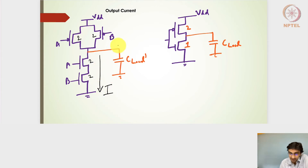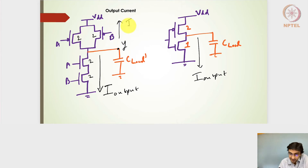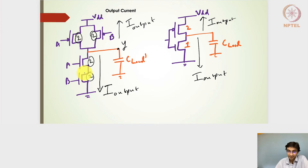The way we size these transistors is: if it is 2-to-1, we want the sizes to be 2 and 2 on both sides, so that while the output is falling down, the falling resistance equals that of the 2-to-1 inverter. This means the output current while the output node switches from 1 to 0 should be the same as that of the 2-to-1 inverter while falling.